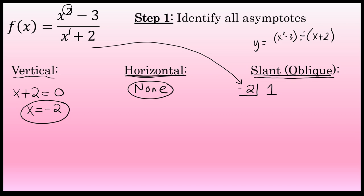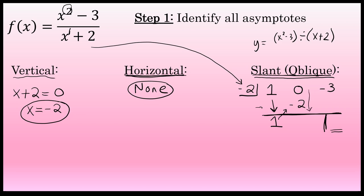The coefficient of x squared is 1. There's no linear term, so I express that as 0 times x to the first, and minus 3 is the constant. The synthetic division process requires leaving an empty row, then drawing a horizontal line, with a vertical line at the bottom where the remainder goes — which I'll ignore when determining the slant asymptote. I bring down the first coefficient, 1, then 1 times negative 2 is negative 2, and 0 plus negative 2 is negative 2. Negative 2 times negative 2 is positive 4.